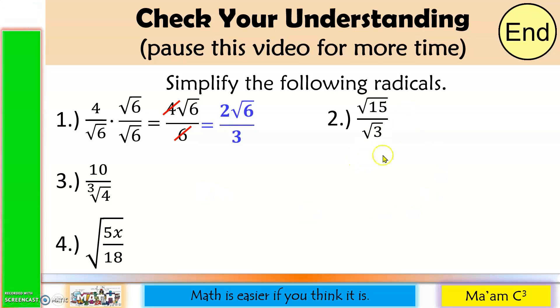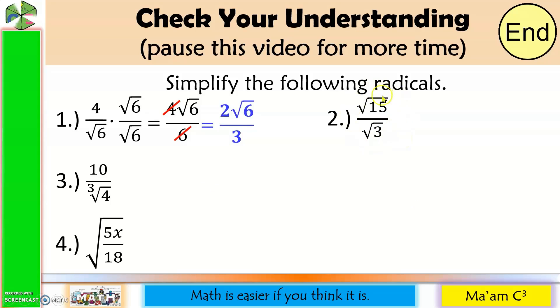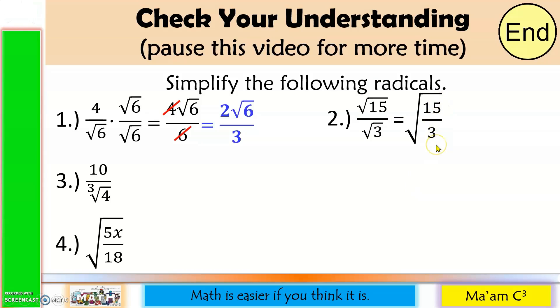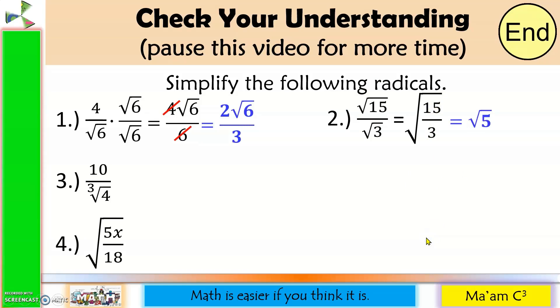Number 2: before multiplying both numerator and denominator by the square root of 3, let us combine this into one radical symbol. 15 divided by 3 is 5. Therefore, the answer is the square root of 5.